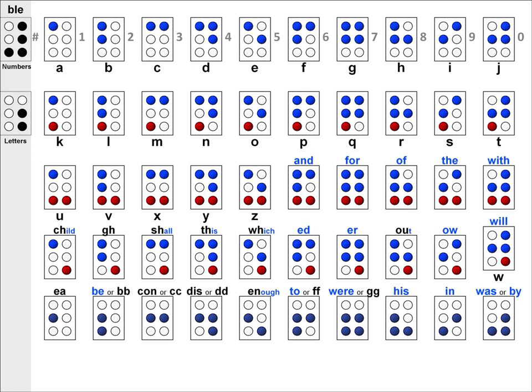The third cell down in our gray column is the capital sign. This cell is placed before a letter that you wish to capitalize, such as the first word in the sentence or the first letter in someone's name. If two capital signs are placed together, then you would consider the entire word that follows as capitalized.